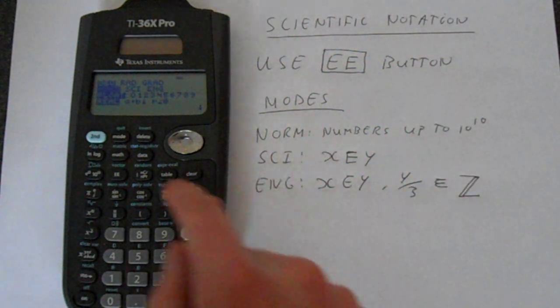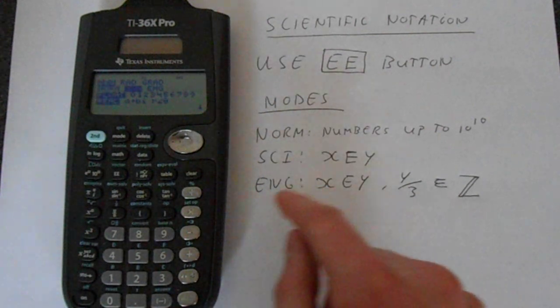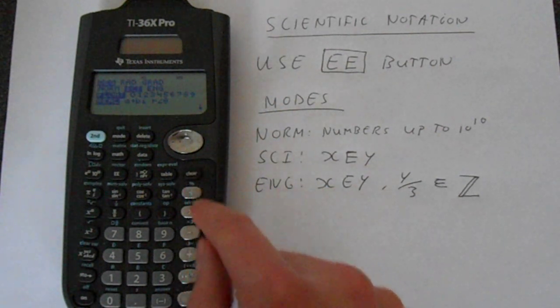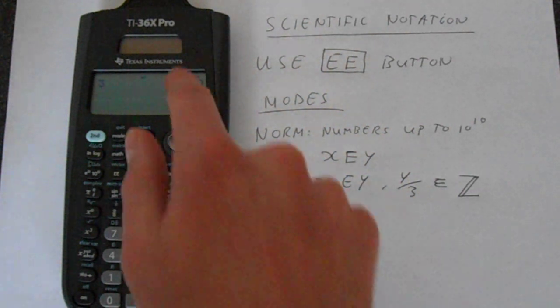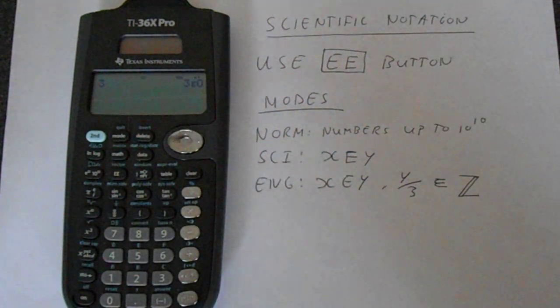Then SCI. Go across. This shows you it in the format of X E Y. So if you put in like 3, it says that 3 is 3 to the power of 0.